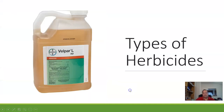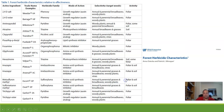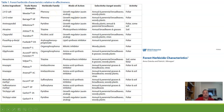When you see something like 'Velpar herbicide,' what are we talking about? This comes from a forest herbicides characteristics paper from the University of Florida. It lists the active ingredient, the trade name you'd see on the front of the bottle, the herbicide family, and the mode of action — how it's going to affect the plant. For hexazinone, it's a photosynthesis inhibitor, so it prevents photosynthesis from happening.